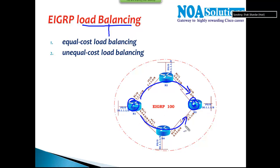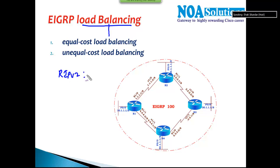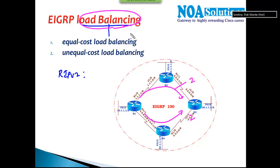Whenever EIGRP or RIP calculates the best route based on hop count, if going via Router 2 is two hops and going via Router 4 is also two hops, you get two routes that are both the best routes. In this kind of scenario it will do something called load balancing — sharing the load between both links, sending some packets from the first path and some from the other path.